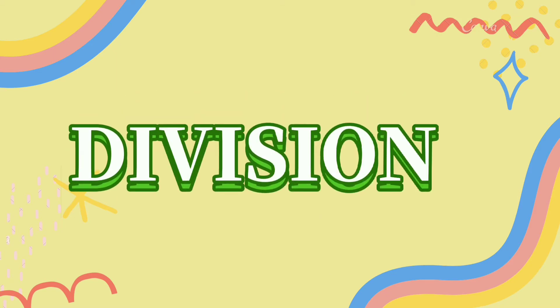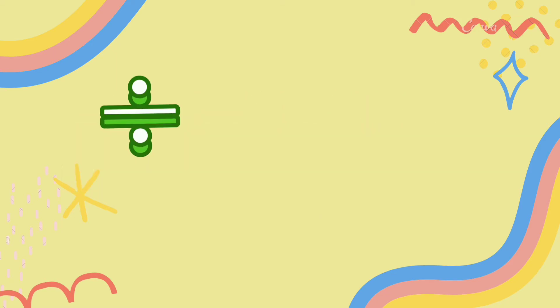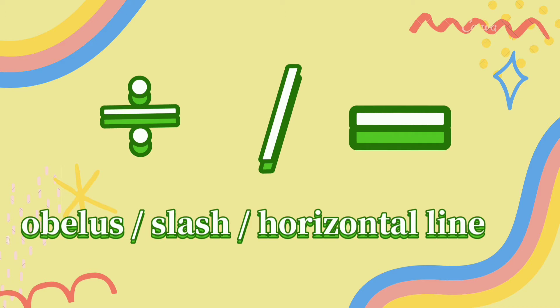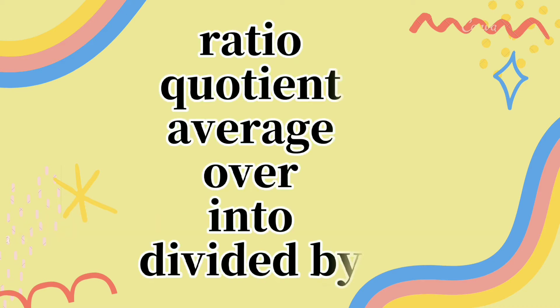Next, we have division. This is its symbol. The keywords we can use for division are: ratio, quotient, average, over, into, divided by.